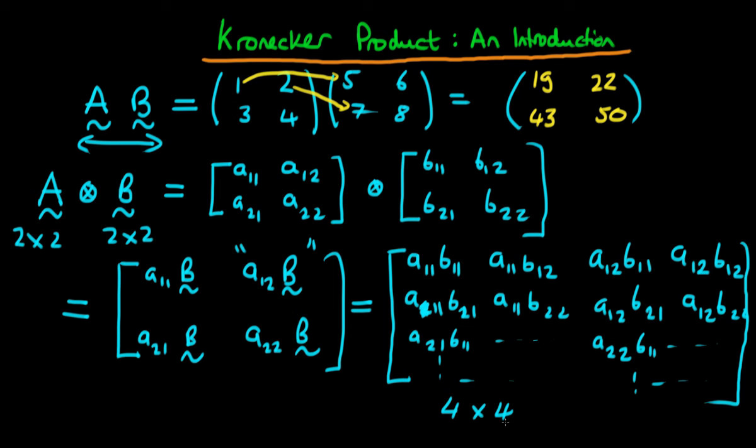In general if I take the Kronecker product of a matrix A with another matrix B where matrix A is let's say M by N and matrix B is P by Q then the product actually has dimensions M times P by N times Q. And it's quite easy to see that because essentially what we're doing is we're taking each of the various components of A and we're multiplying it by the entire matrix B so it's unsurprising that the corresponding rows multiply and the corresponding columns multiply as well.